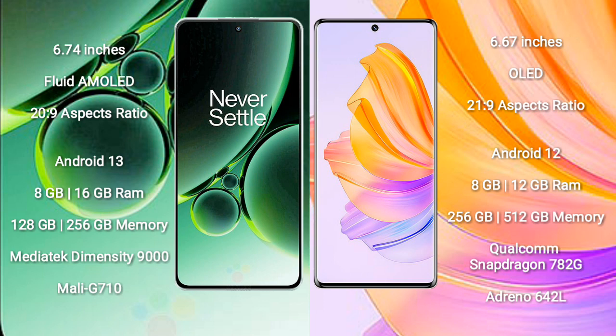OnePlus Nord 3 runs on the Android 13 operating system. Honor 80 runs on the Android 12 operating system. OnePlus Nord 3 comes with 8GB or 16GB RAM and 128GB or 256GB internal storage.